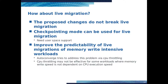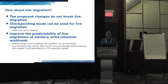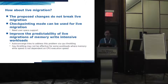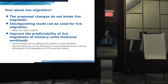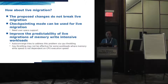How about live migration? The proposed change does not break live migration — it can be used by live migration, but obviously needs user-space support. If the user space has support for the checkpointing mode, it will help improve the predictability of live migration for memory-write-intensive workloads. QEMU currently has an auto-converge feature that addresses this problem via CPU throttling, but it may not be effective for certain workloads. If we use checkpointing mode where it pauses the VM and harvests dirty pages, we can be sure that the migration will succeed.